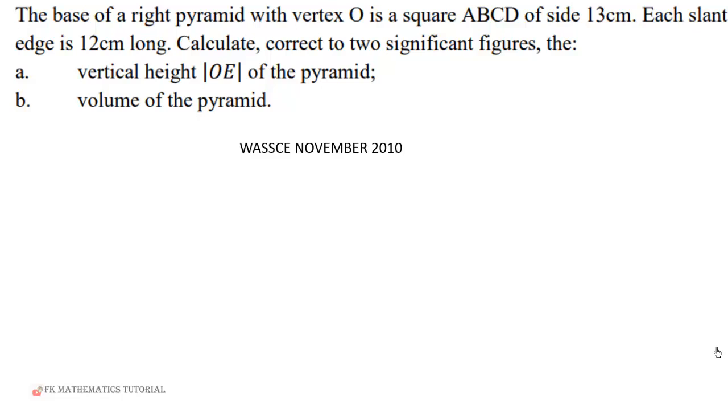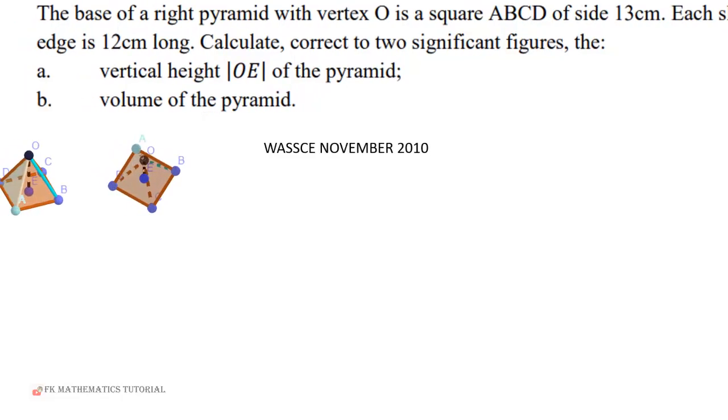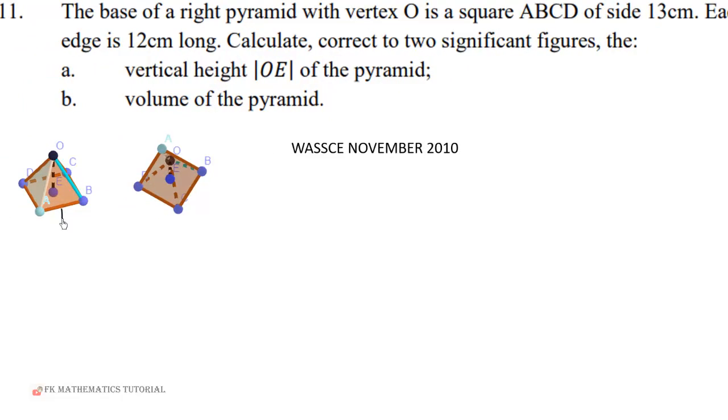Calculate, correct to two significant figures, the vertical height OE of the pyramid and volume of the pyramid. Let's have a look at this pyramid. Here is the pyramid. The base of the pyramid is square and the side of the square is 13, and the slant edge is 12 centimeters.